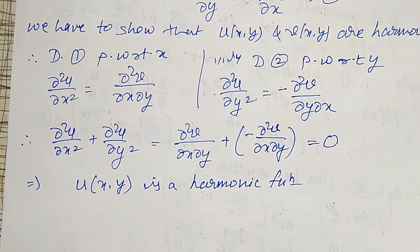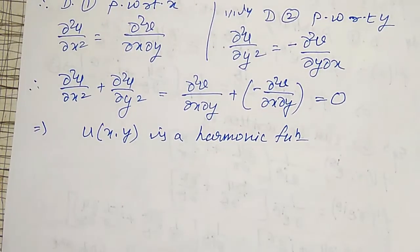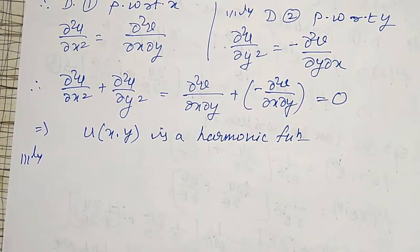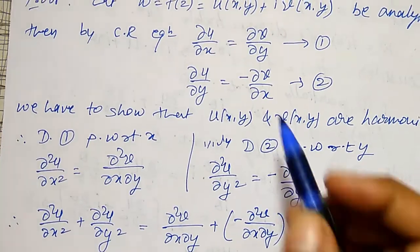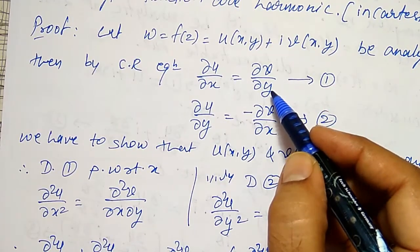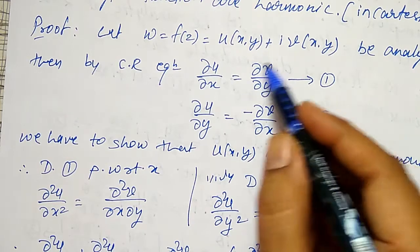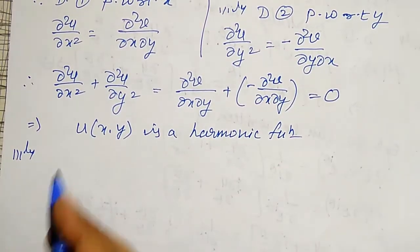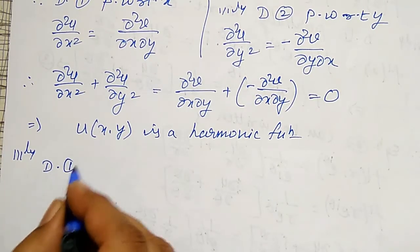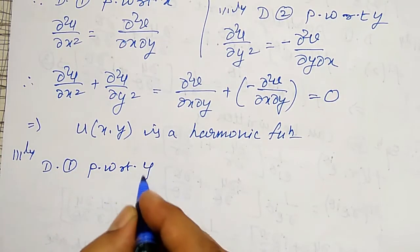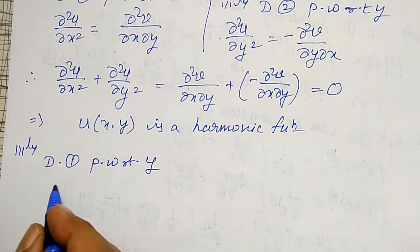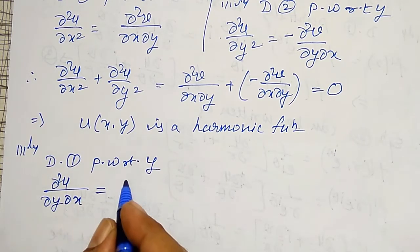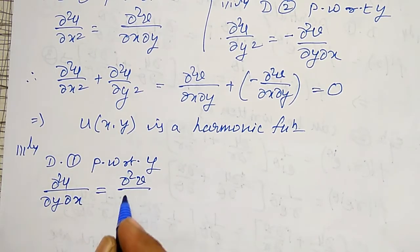Similarly, we also have to show that v is a harmonic function. To show that v(x,y) is harmonic, I want dou²v/dou x² + dou²v/dou y² = 0. Since dou v/dou y is already in CR equation one, I differentiate that equation partially with respect to y first: this gives dou²u/dou y dou x = dou²v/dou y².